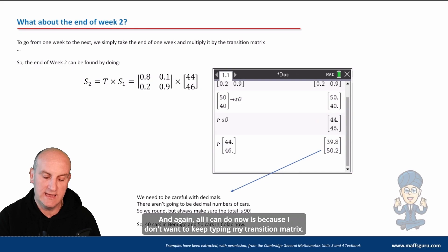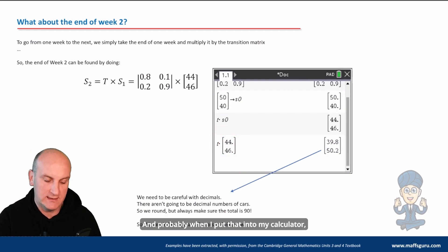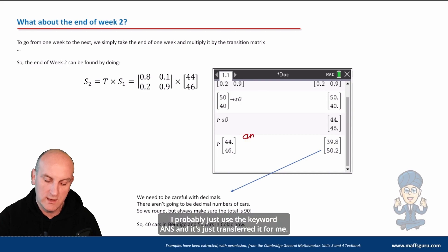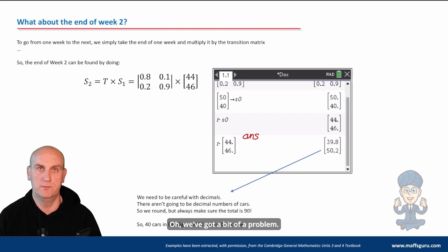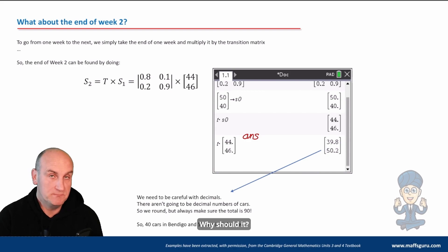So there's my S₁, 44, 46, shown here on my calculator. And again, all I can do now is, because I don't want to keep typing my transition matrix in, I can just say, well, do T times that matrix there. And probably when I put that into my calculator I probably just use the keyword 'ans' and it's just transferred it for me. Oh, we've got a bit of a problem.